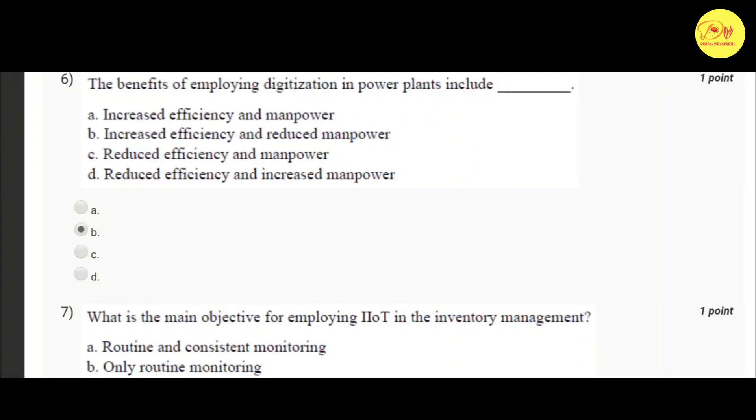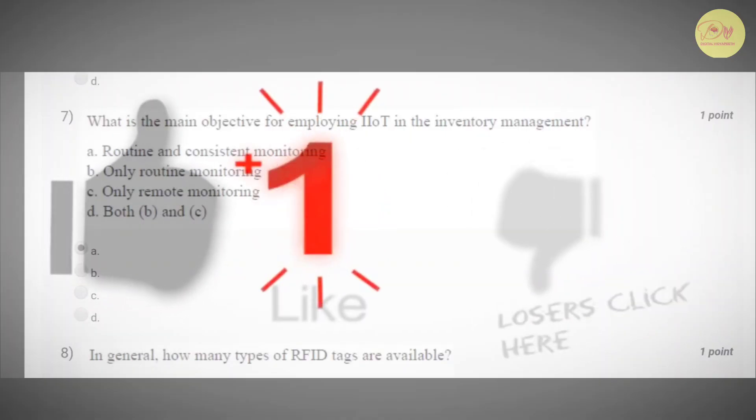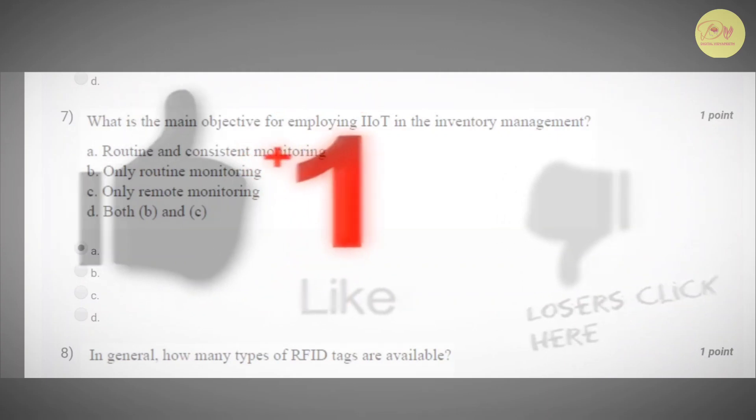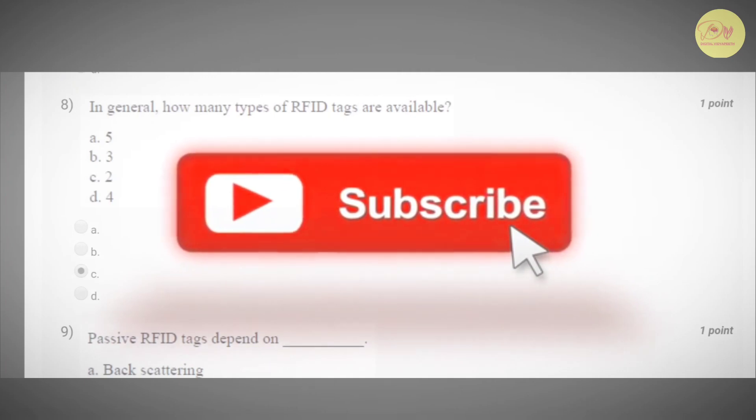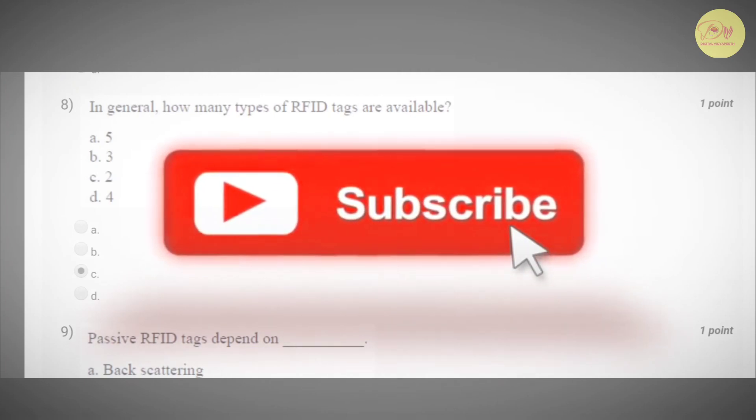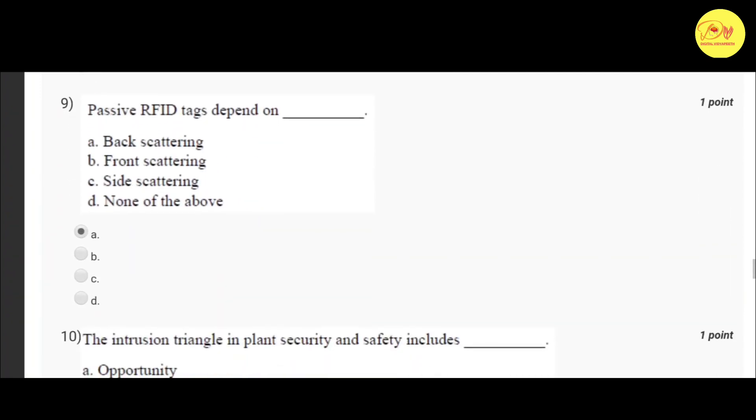Our seventh question is: What is the main objective for employing IIoT in the inventory management? Correct option is A, routine and consistent monitoring. Our eighth question is: In general, how many types of RFID tags are available? Correct option is C, 2.